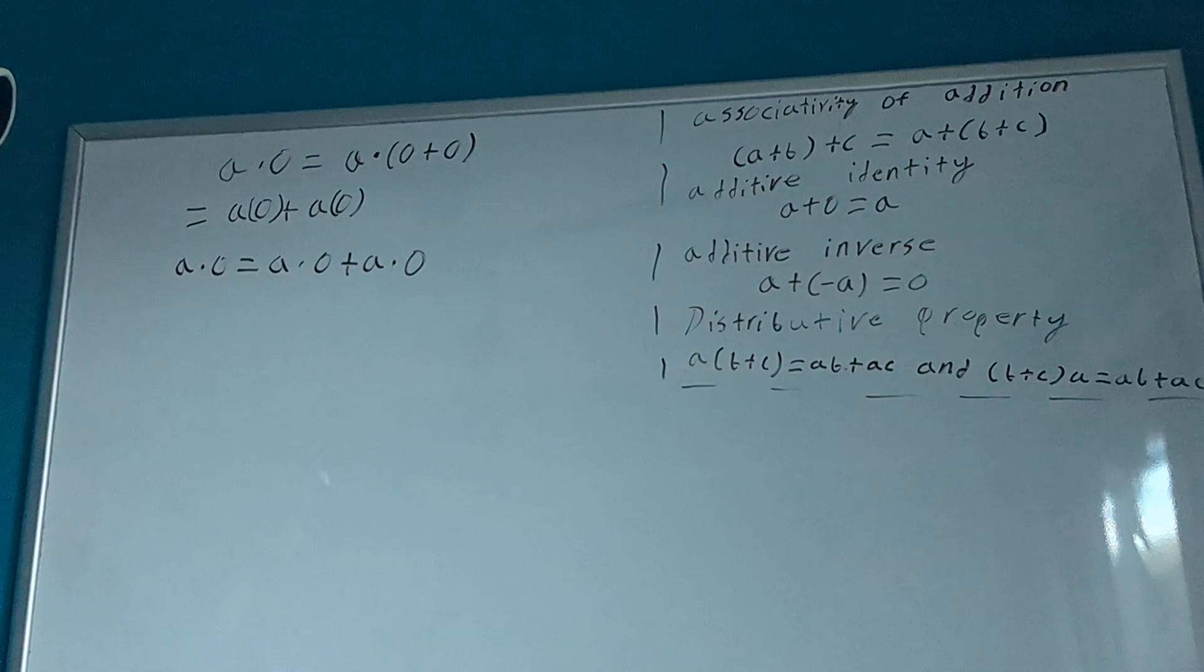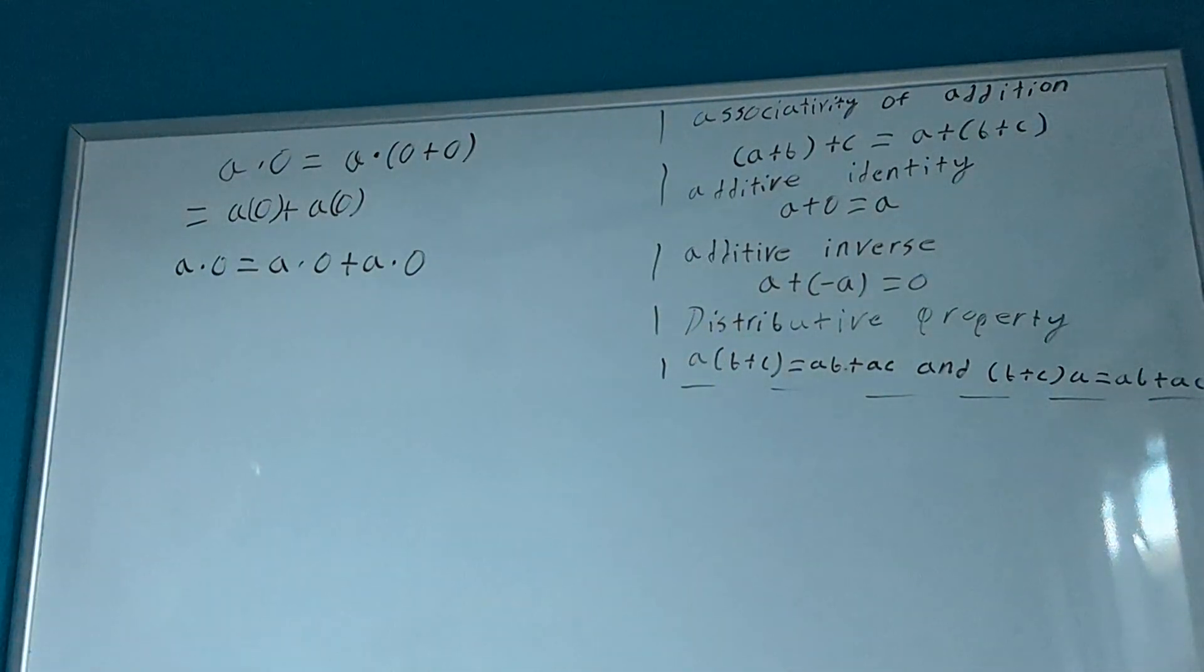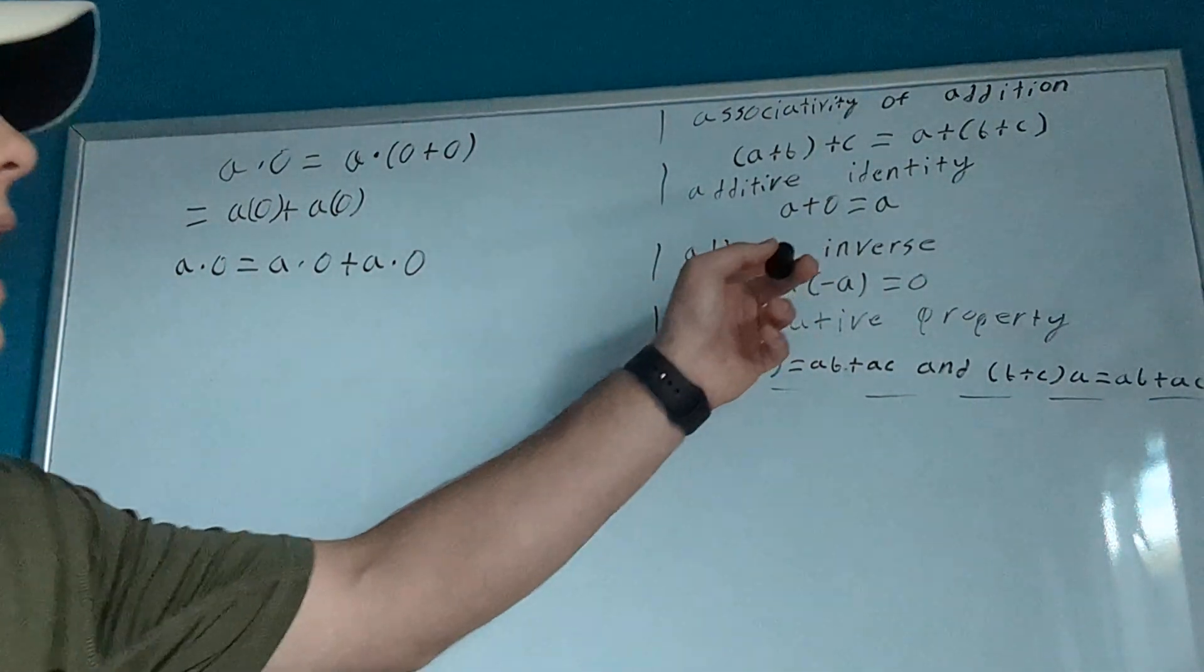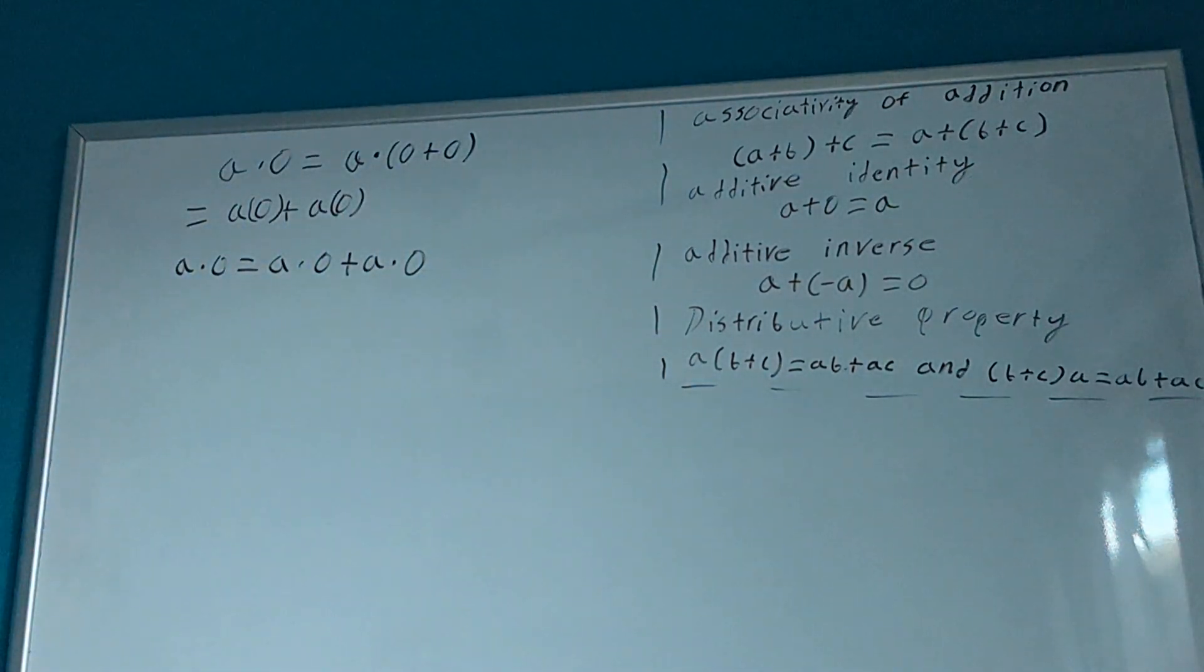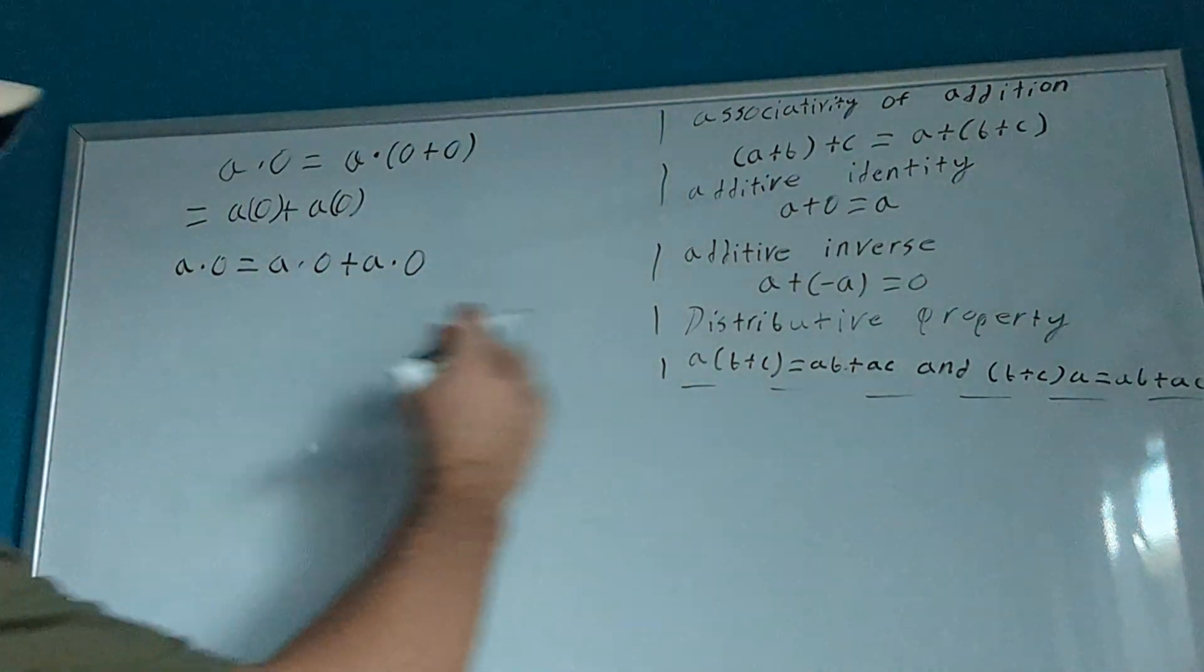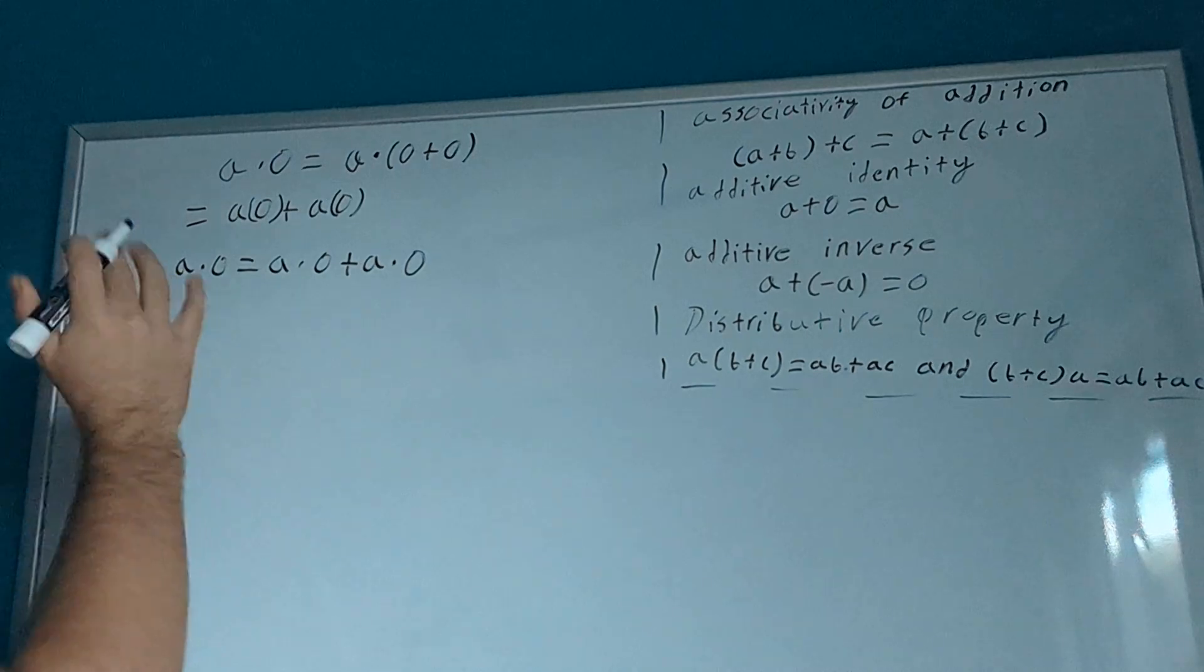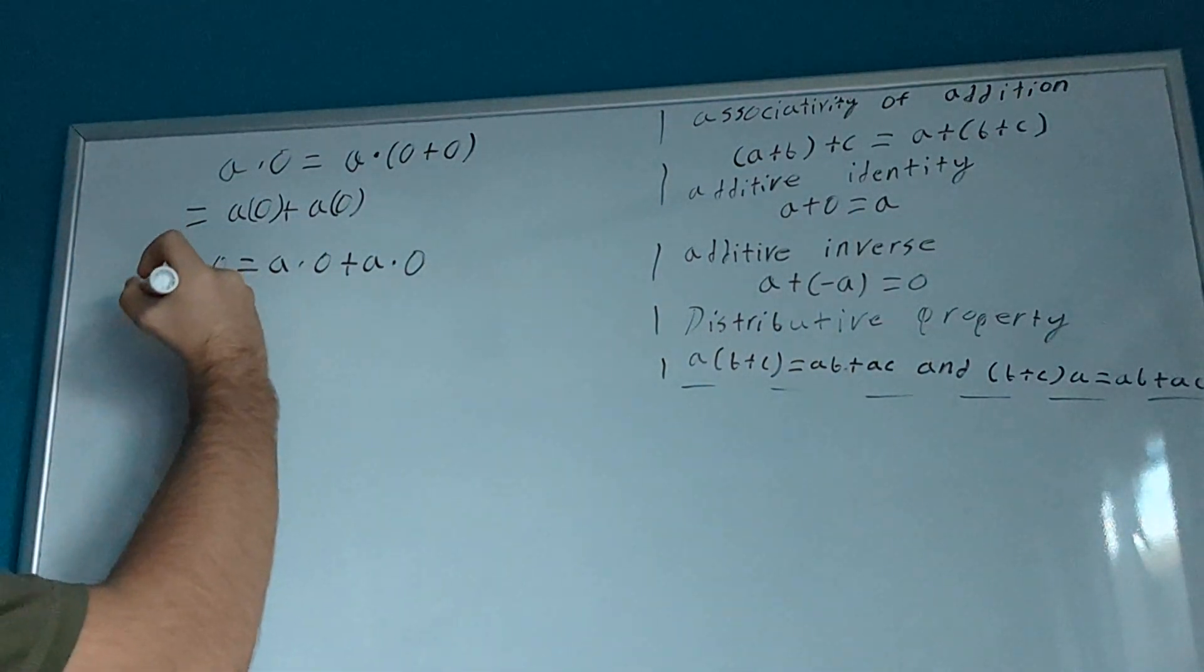Then, what we're going to do is use the additive inverse, where a plus some negative a equals 0. So, what we're going to do is we're going to add the additive inverse or the negative version of this to both sides.